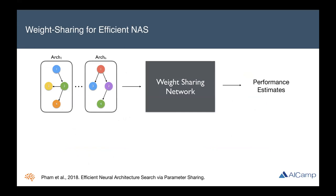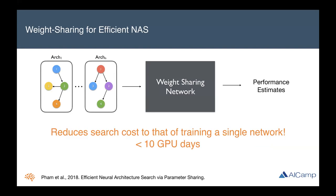The good news is that more recently in the research community, there's been a concerted effort to reduce the computational cost associated with NAS. Weight sharing in particular has emerged as a promising method for efficient neural architecture search. The way weight sharing works is that you have a single weight-sharing network that encompasses all the possible architectures in your search space, so you can use this single network to perform the search instead of training all the architectures individually. With weight sharing, the search cost is reduced to that of training just a single network — usually less than 10 GPU days.